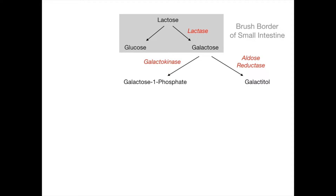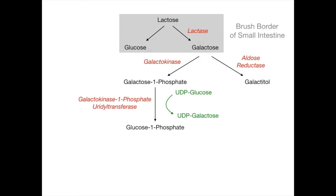Galactose-1-phosphate can be converted into glucose-1-phosphate by the enzyme galactose-1-phosphate uridyl transferase. In this step, UDP-glucose is converted into UDP-galactose as a cofactor. This step is extremely high yield. Once you have glucose-1-phosphate, it has many downstream options — it can enter glycolysis, glycogenesis, or other biochemical pathways.